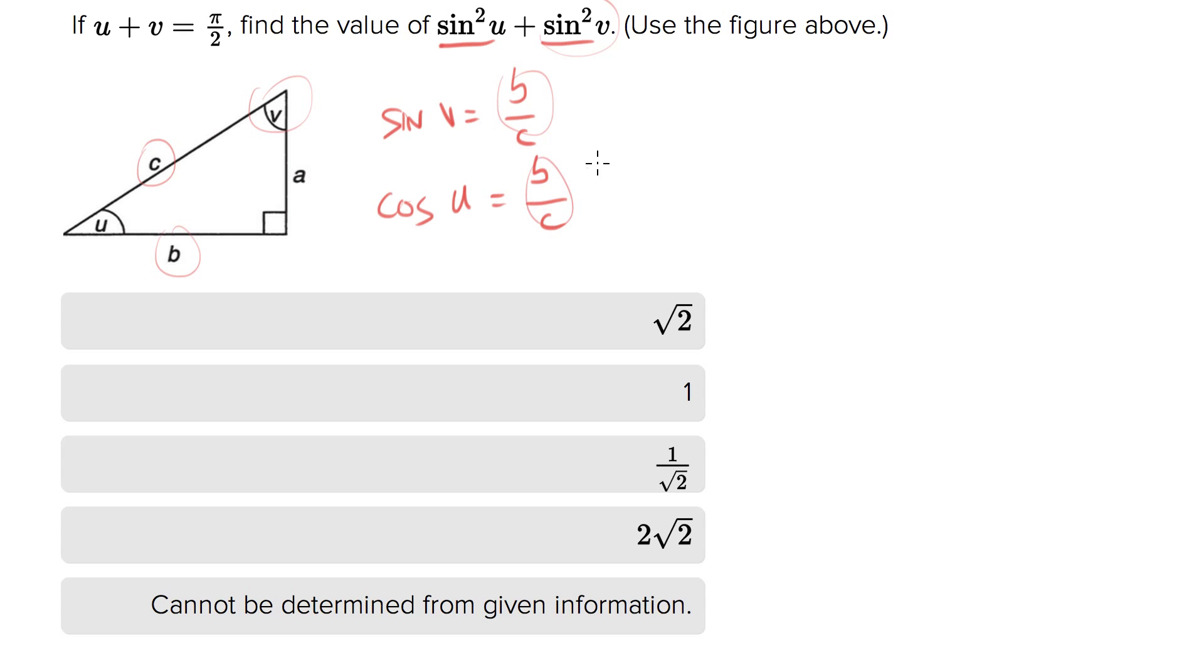See how they're both equal to the same thing? So if sine v equals cosine u, we can do a substitution. Instead of sine squared u plus sine squared v, we can change that to sine squared u plus cosine squared u.